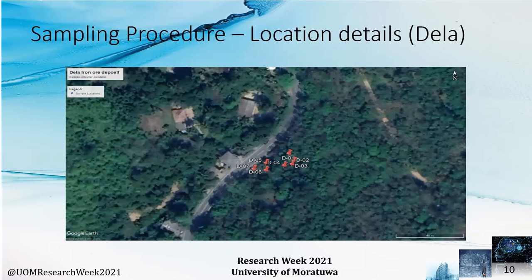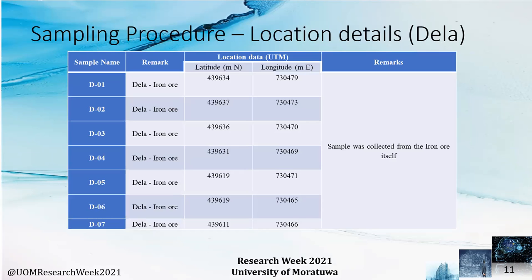At the Dara deposit, seven samples were collected, and all samples were collected from the iron ore itself, because the weathered material was exposed to the ground surface, so we could easily acquire the samples.